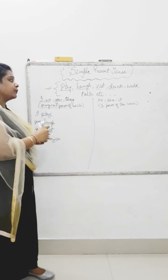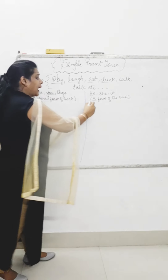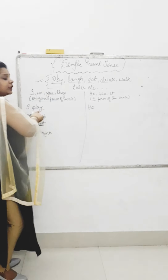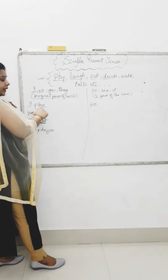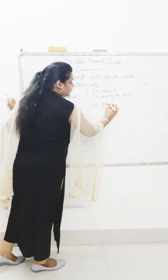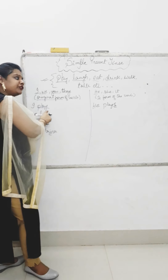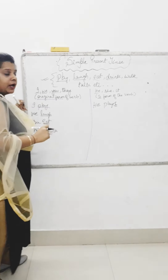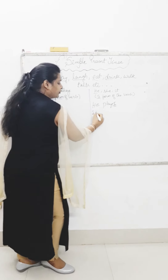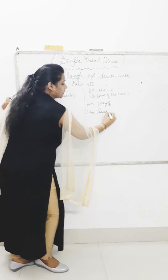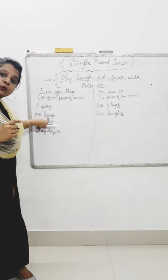But when a sentence begins with the subject 'he,' we just have to add S to the original form of the word. How? He plays. I wrote 'I play' over here, then we write 'he plays.' We added S to the original form of the word. Now, what will we write for 'we laugh'? Here, I have to start the sentence from 'she.' Then it will be 'she laughs.' Again, I added S to the original form of the word.